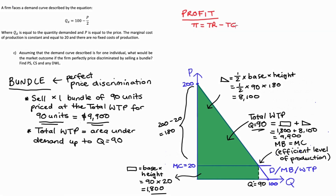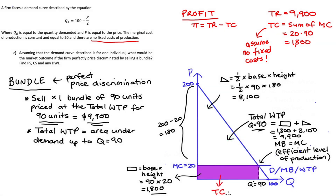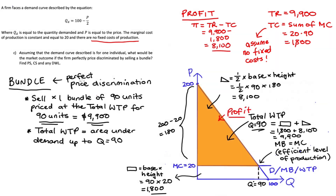For profit, we take total revenue minus total cost. Total revenue is 9,900 (selling one bundle at that price). Total cost, with no fixed costs, is the sum of marginal costs: 20 times 90 = 1,800, shown as the purple area. Profit therefore equals 9,900 minus 1,800 = 8,100, which is the orange area — the difference between the green total revenue area and the purple total cost area.